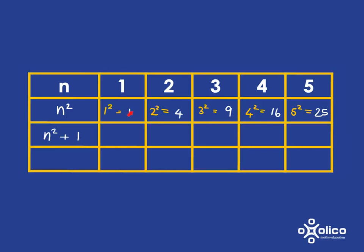n squared is 1, so all I have to do is take that n squared and add 1 to it. So it's going to be 2 here. Here the n squared is 4, so I add 1, it's 5. 10, 17, 26.